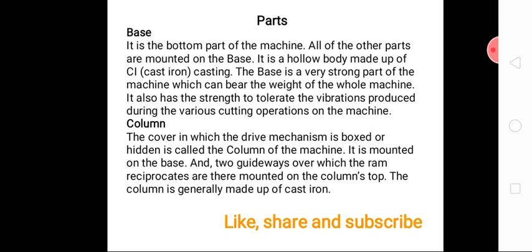Now we are going to see what are the parts of the shaper machine. First, there is the base. On the base the whole assembly of the shaper machine is situated. The base is made up of cast iron. It is a very strong part of the machine which can bear the weight of the whole machine.